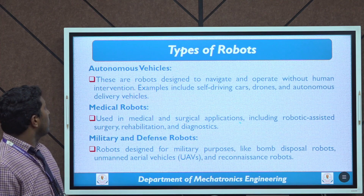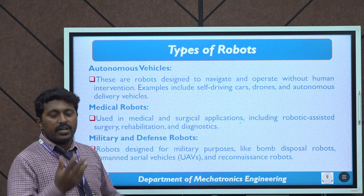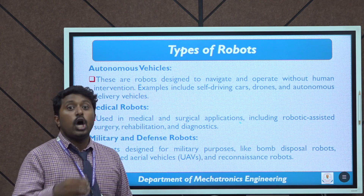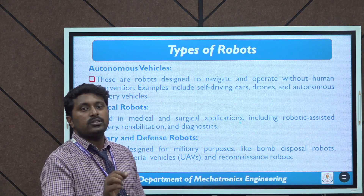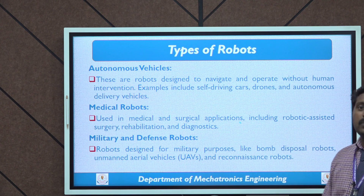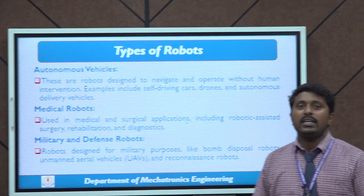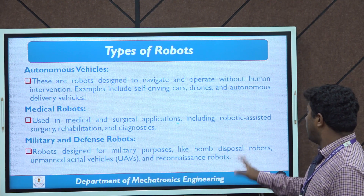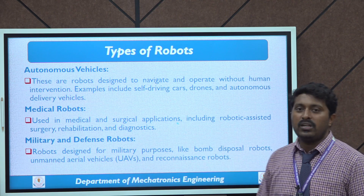Next are autonomous vehicles — robots designed to navigate and operate without human intervention. Examples include self-driving cars, drones, and autonomous delivery vehicles. Next are medical robots used for doctor and surgical assistance. Then military and defense robots, designed for purposes like bomb disposal and unmanned aerial vehicles.